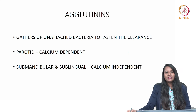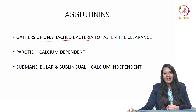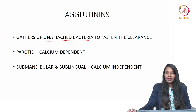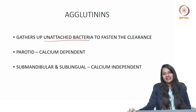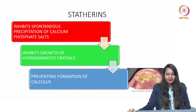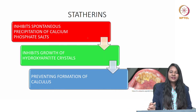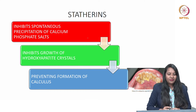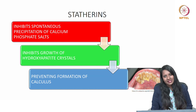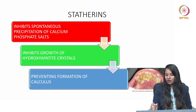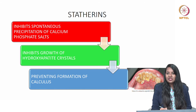Agglutinins: salivary agglutinins gather up unattached bacteria to fasten their clearance. In the parotid, it is calcium-dependent, whereas in submandibular and sublingual glands it is calcium-independent. Statherins inhibit spontaneous precipitation of calcium phosphate salts, thus inhibiting growth of hydroxyapatite crystals and preventing formation of calcific deposits — that is, calculus — thereby preventing further progression of periodontal disease.